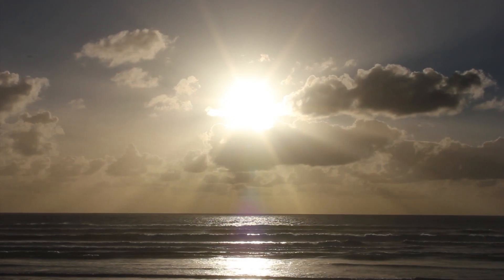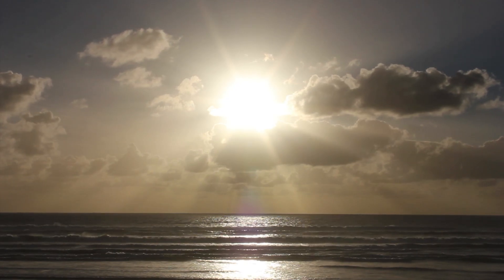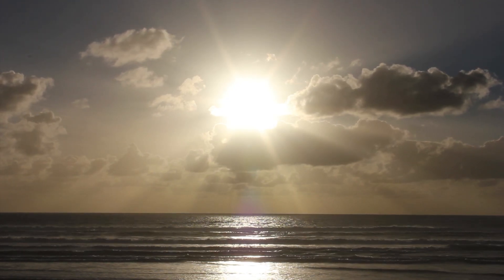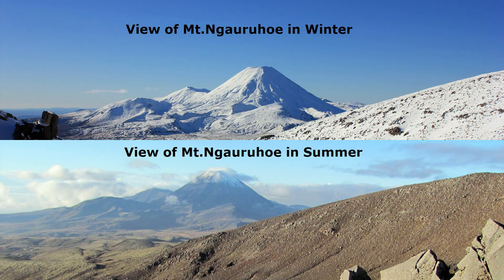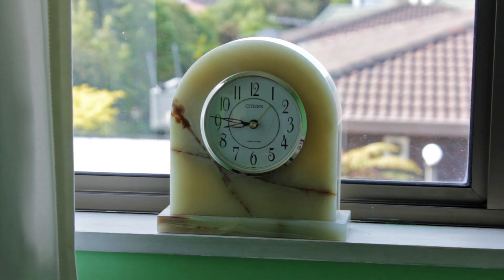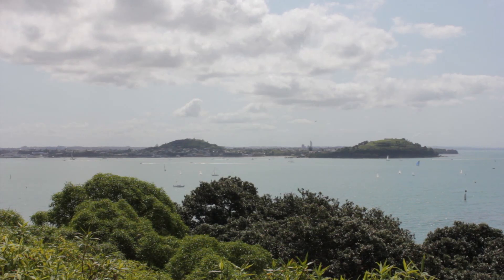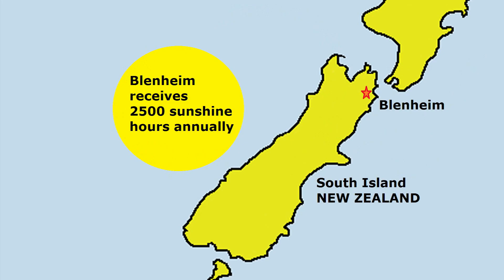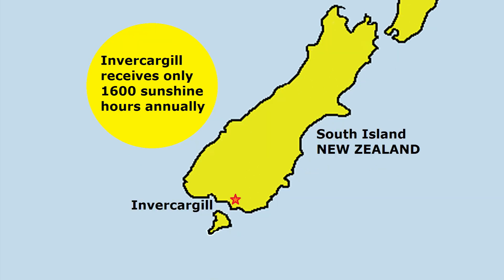Sunshine is the amount of incoming solar radiation received at a particular location, also known as insolation. The amount of sunlight a location receives depends on factors such as latitude, the weather, the seasons of the year, and the time of day. A given location receives its maximum sunshine at noon, when the sun is at its highest point in the sky. In New Zealand, the town of Blenheim receives 2,500 hours of sunshine a year, while Invercargill, by contrast, only receives 1,600 hours.